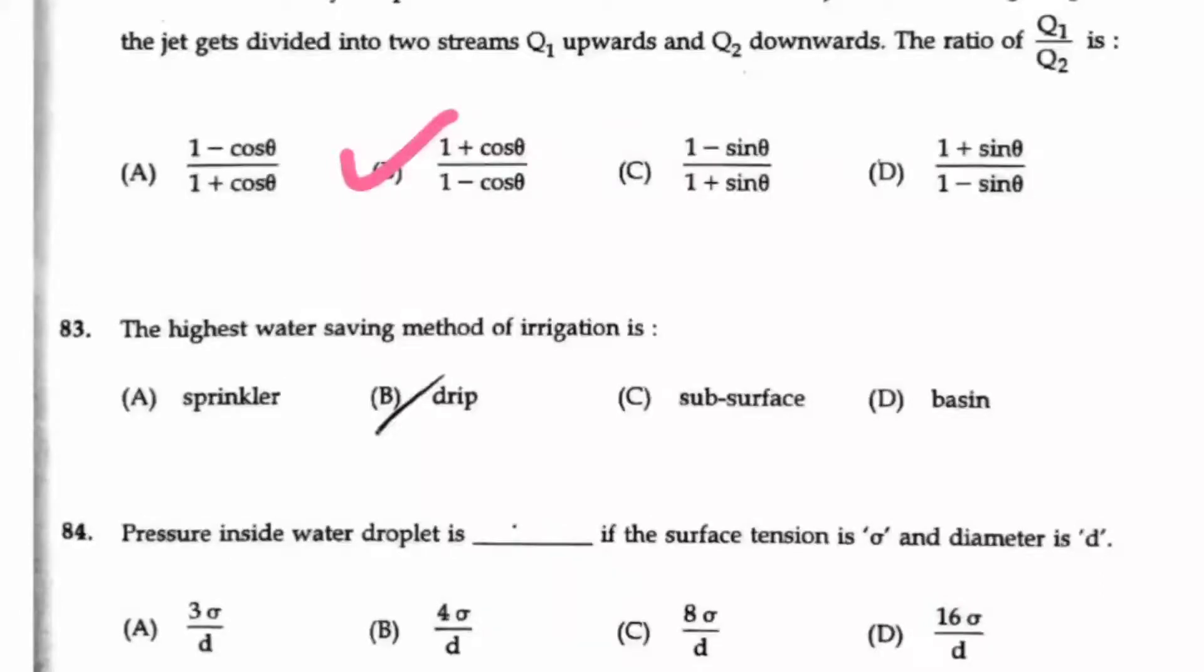Question number 83. The highest water saving method of irrigation. So the highest water saving is drip irrigation only, B.